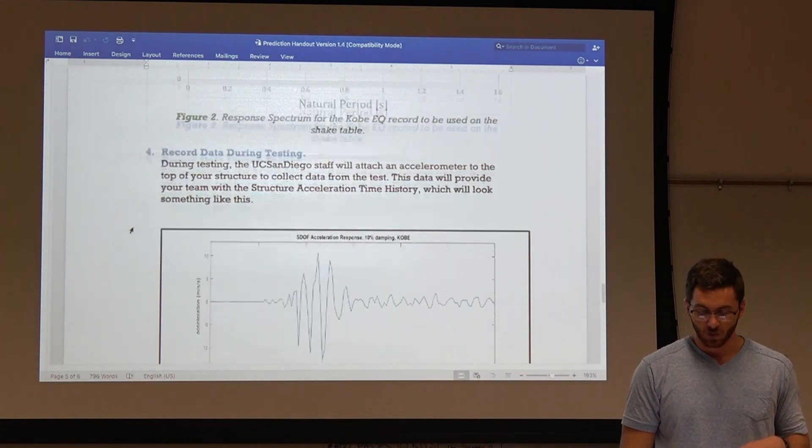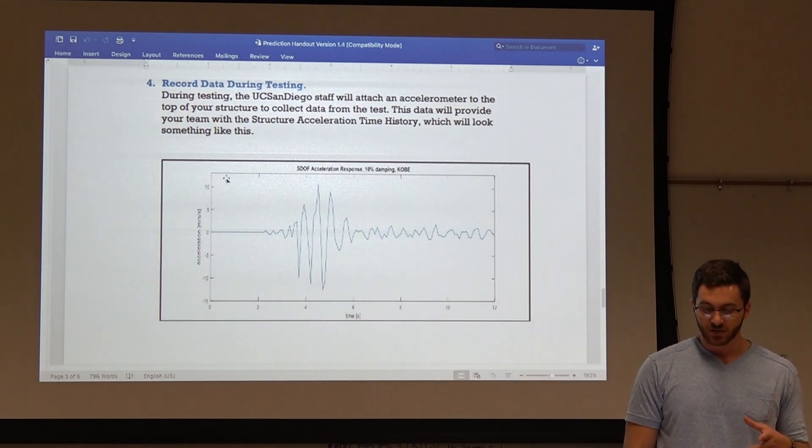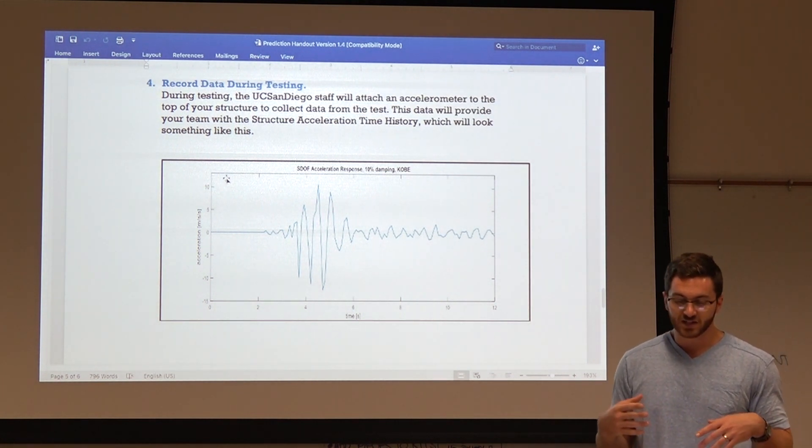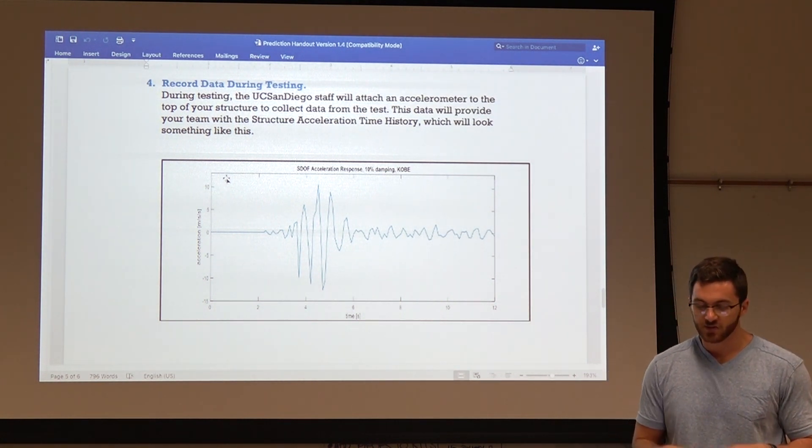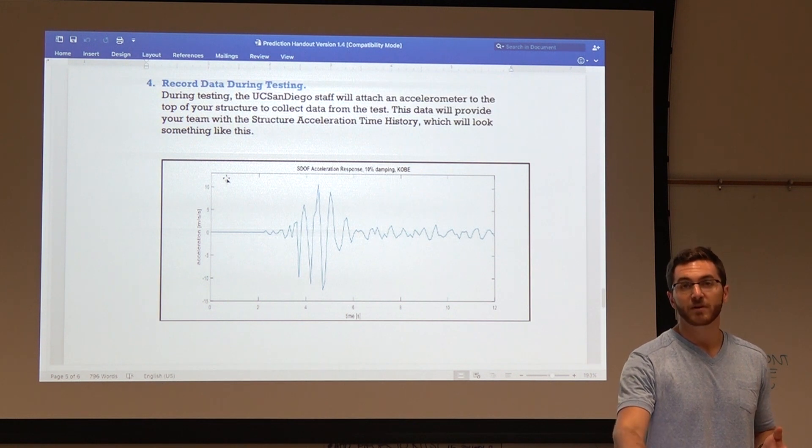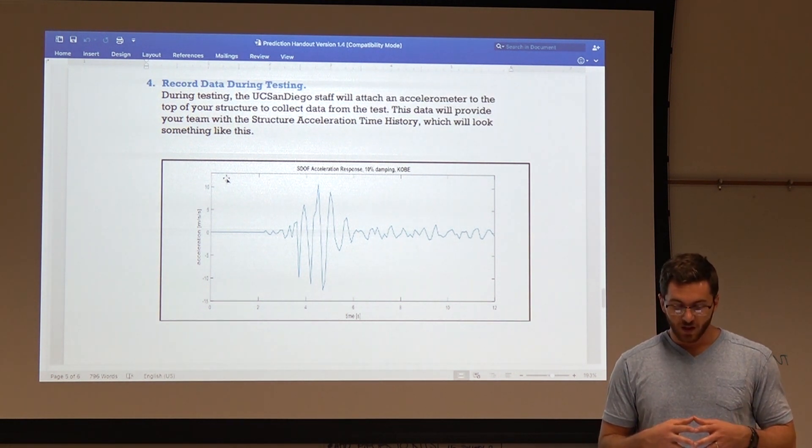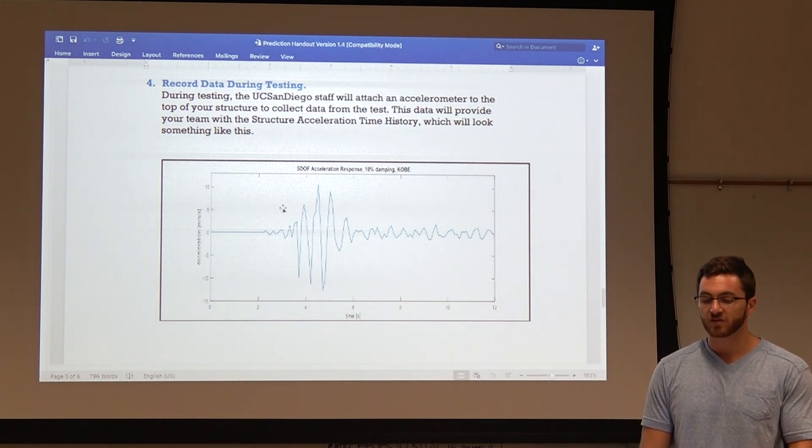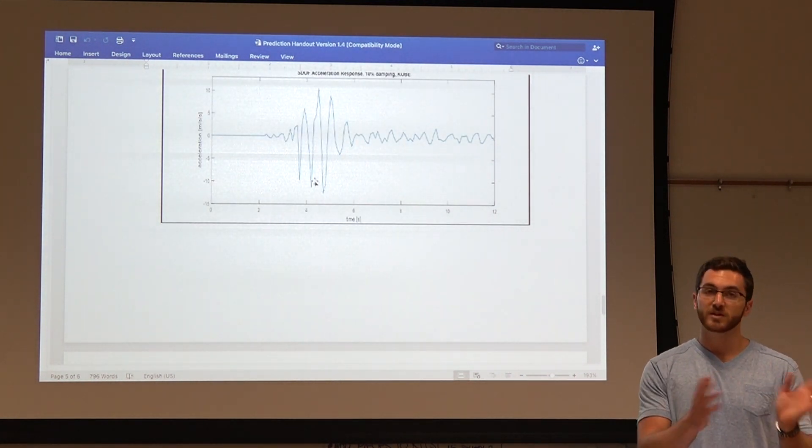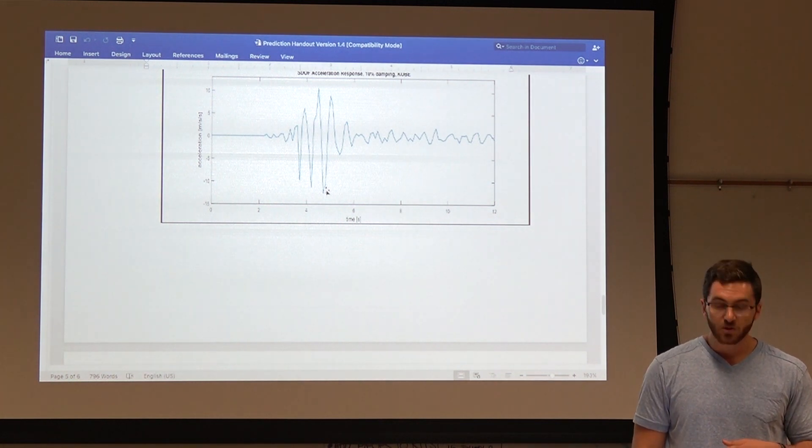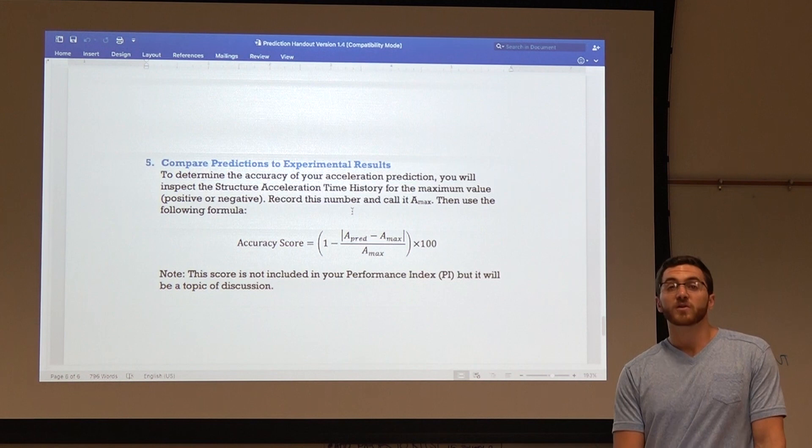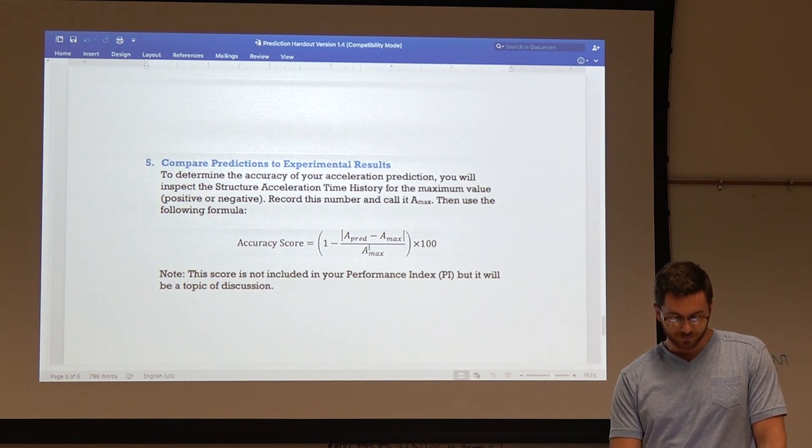Now, how do we check that to actual results? Well, what we do is, during testing, the staff or personnel will attach an accelerometer to the top of your structure to collect data from the test. So, this accelerometer measures the acceleration that is happening at the top of the structure with respect to time. This data will provide your team with a structure acceleration time history that might look something like this. And this has a maximum acceleration. It could be positive or negative, that just means if it's going left or right. And you'll measure the maximum acceleration from this graph, and you'll compare it to what you predicted. And using those numbers, you'll predict an accuracy score using this equation.